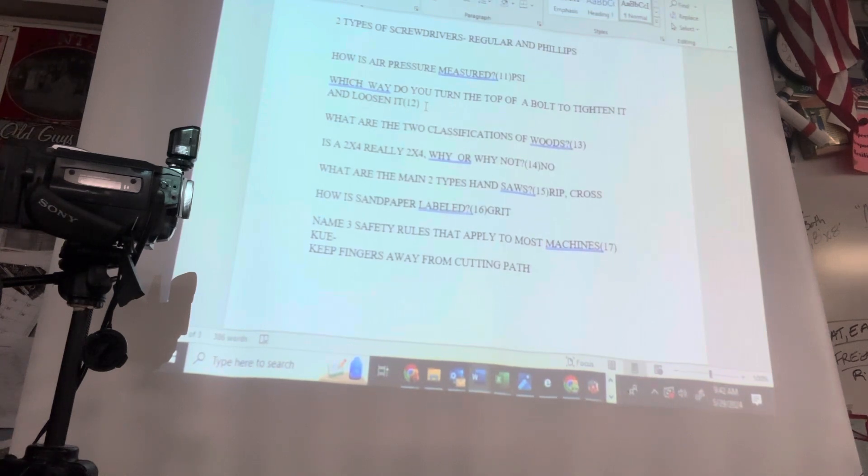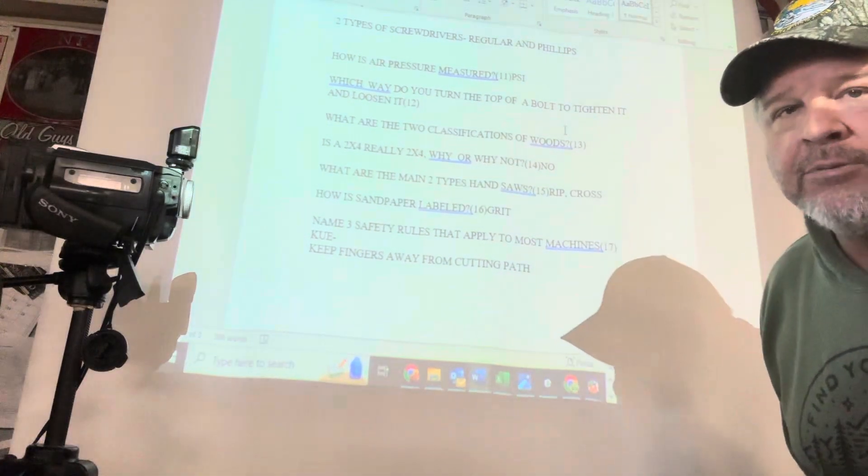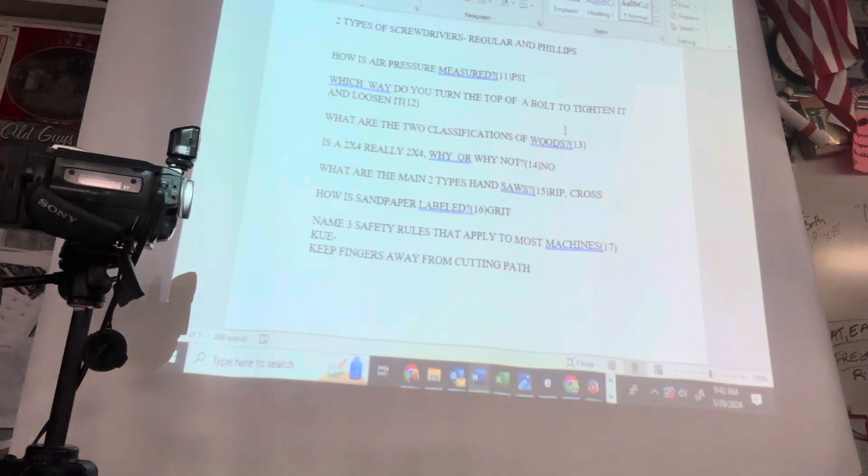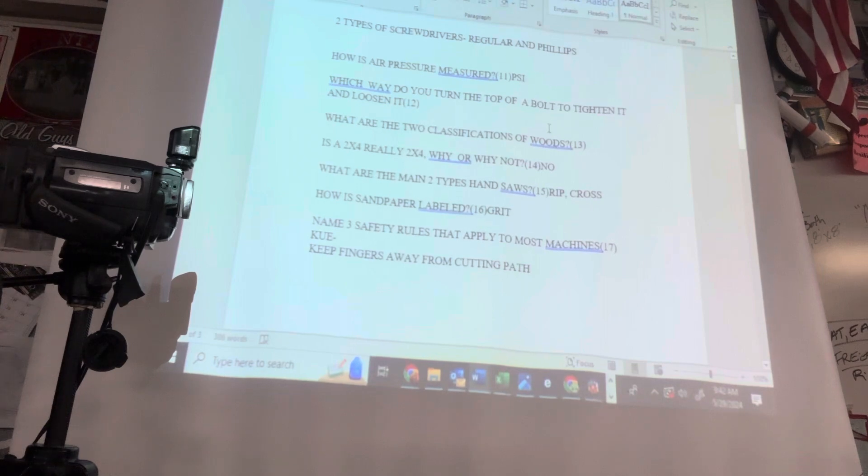What are two classifications of woods? Hardwoods and softwoods, also known as conifers and deciduous. Hardwoods have leaves, softwoods, another name for them is conifers which means cone-bearing, they have cones or needles. You should know softwoods because Washington is the Evergreen State, which are softwoods. Is a two-by-four really two by four, why or why not? No, it is not two by four, it's one and a half by three and a half, mainly because it's sanded and it is dried in a kiln which shrinks it up.